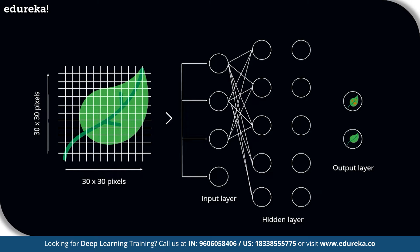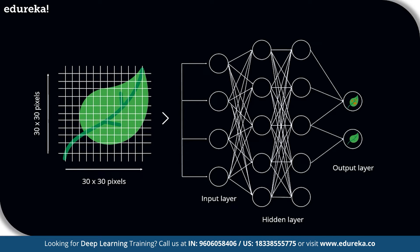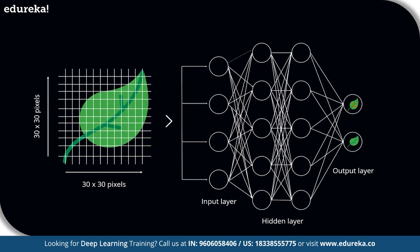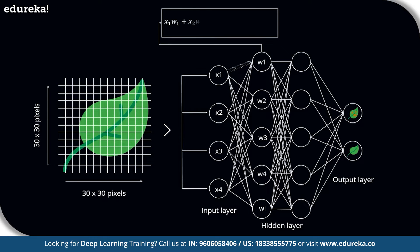Just like how our brains have neurons that help in building and connecting thoughts, an artificial neural network has perceptrons that accept inputs and process them by passing them on from the input layer to the hidden and finally the output layer. As the input is passed from the input layer to the hidden layer, an initial random weight is assigned to each input. The inputs are then multiplied with their corresponding weights and their sum is further processed through the network.